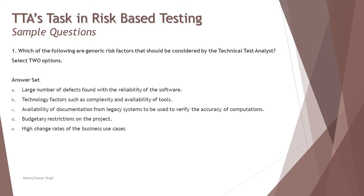The first question asks: which of the following are generic risk factors that should be considered by the technical test analyst? Option A: a large number of defects found with the reliability of the software — reliability is a non-functional parameter, so it falls under the scope of the technical test analyst. Option B: technology factors such as complexity and availability of tools.